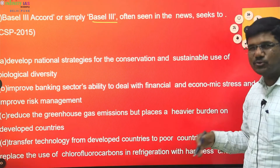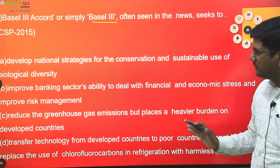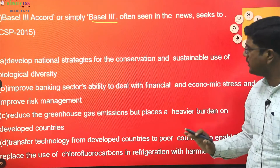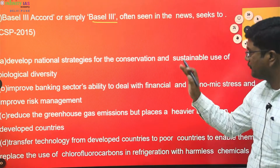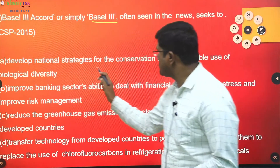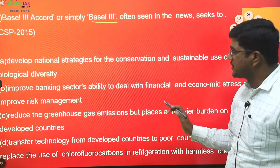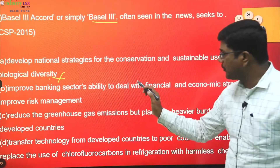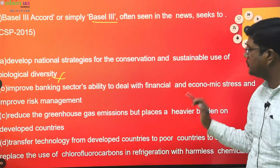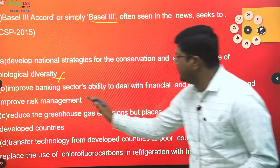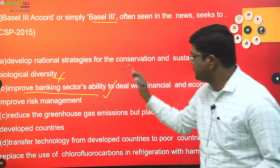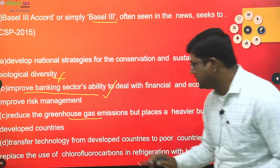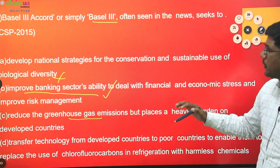Next question: Basel 3 accord, or simply Basel 3, often seen in the news. This question is from the economic section. Reading option one — about developing national strategies for conservation and sustainable use of biological diversity — that is unrelated to banking. Option two — improve banking sector's ability to deal with financial stress — that is related to the banking sector, so the answer is B.